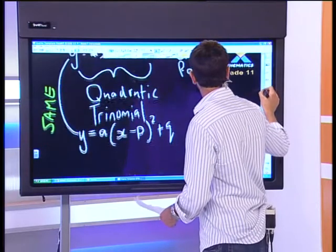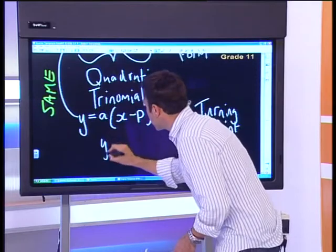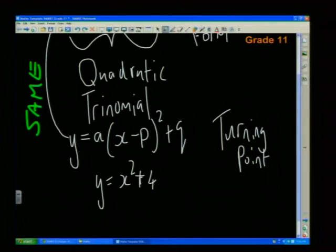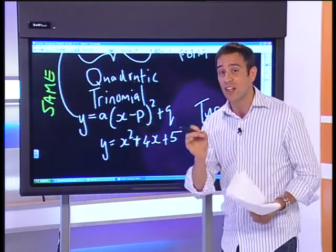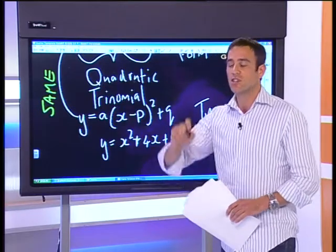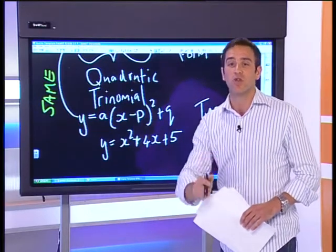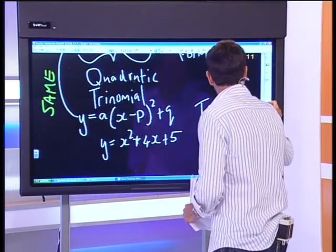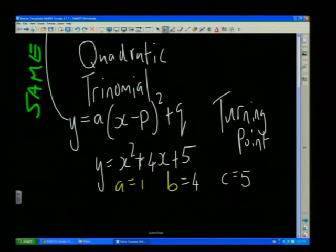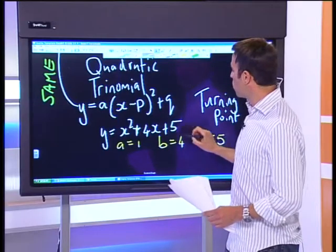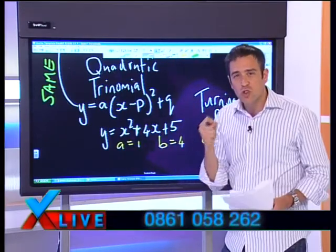A numerical example: y equals x squared plus 4x plus 5. I'm going to do an example and then summarize the steps. Completing the square has a very straightforward process — almost like baking a cake, you do the same thing every time. The first thing I do is identify what a, b, and c are. A is 1, b is 4, and c is 5, in terms of y equals ax squared plus bx plus c.